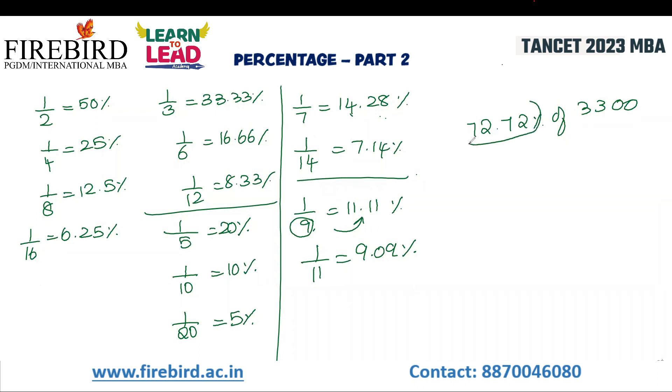For 72.72, what is it? Multiples of 9, the denominator is 11. 9 times 8 is 72. So 8 by 11 into 3300.